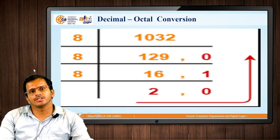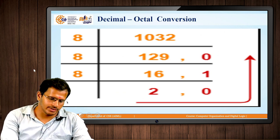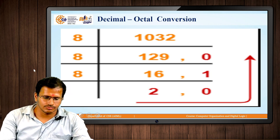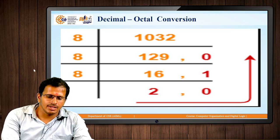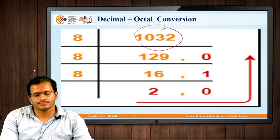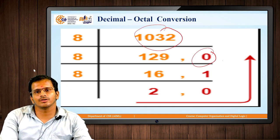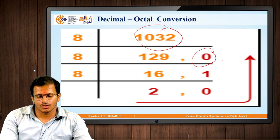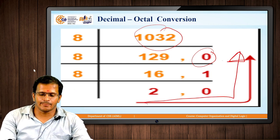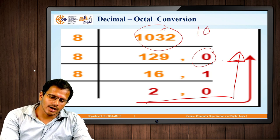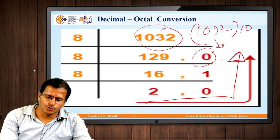The next conversion is how the decimal number is converted to octal format. The division is done by 8. The remainder obtained is written on the right-hand side, and then we take the values from downward to upward. The conversion of decimal 1032 gives 2010 in octal.